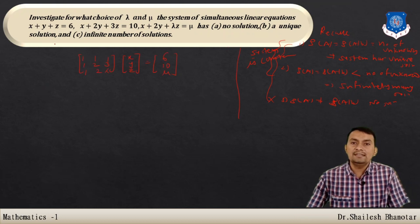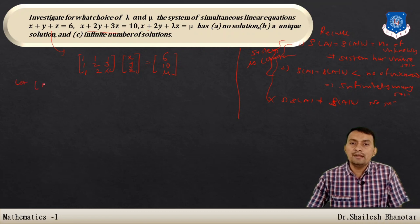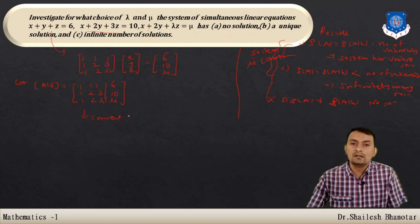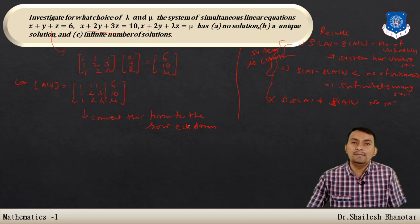Using this fact, let us write the matrix form: 1x + 1y + 1z = 6, 1x + 2y + 3z = 10, 1x + 2y + λz = μ. We write the augmented matrix [A|b]: rows are [1, 1, 1 | 6], [1, 2, 3 | 10], [1, 2, λ | μ]. We will convert this to row echelon form using Gauss elimination.